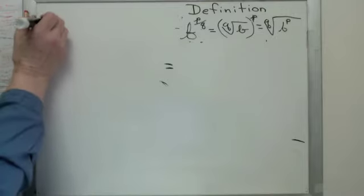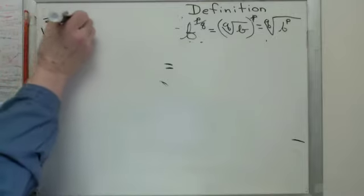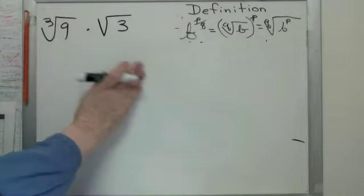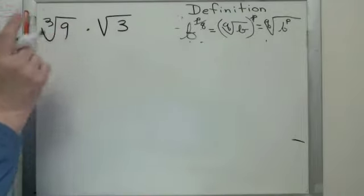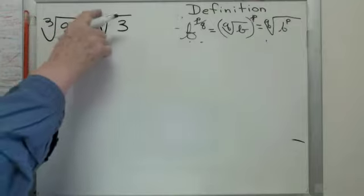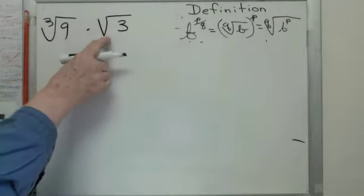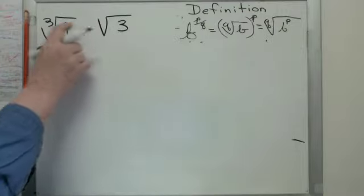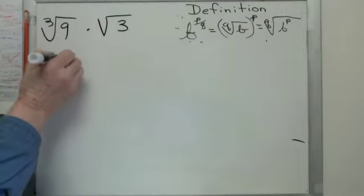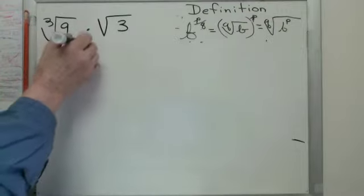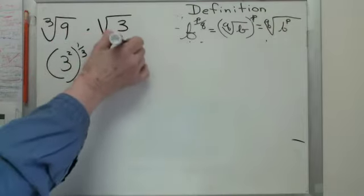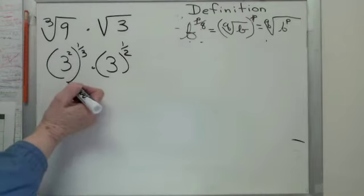What if you had cube root of 9 times square root of 3? Well, I can't multiply these because the roots are different. If it was cube root of 9 times cube root of 3, I could multiply and say cube root of 27. But I can't because the roots are different. So 3 squared to the 1/3rd times 3 to the 1 half. Right?